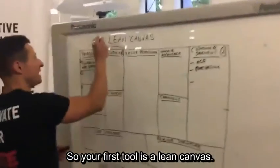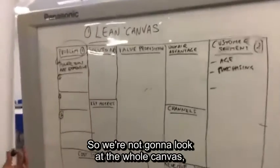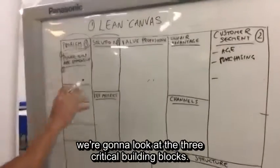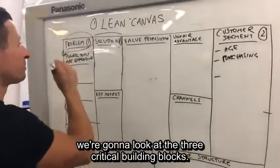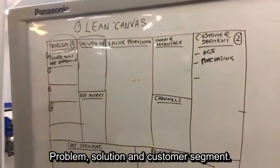So your first tool is a lean canvas. Now we're not going to look at the whole canvas, we're going to look at the three critical building blocks: problem, solution, and customer segment.